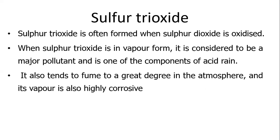Sulfur trioxide is often formed when sulfur dioxide is oxidized. When sulfur dioxide vapor is formed, it is considered to be a major pollutant and a component of acid rain. It disperses to a greater degree in the atmosphere and is also highly corrosive.